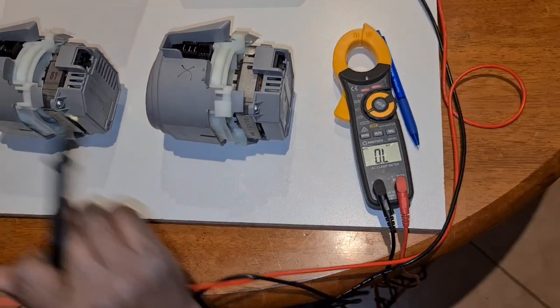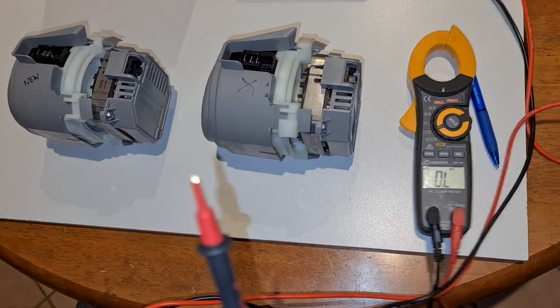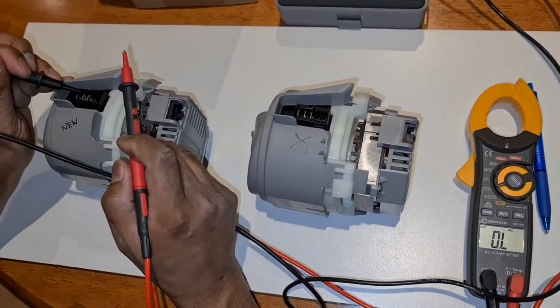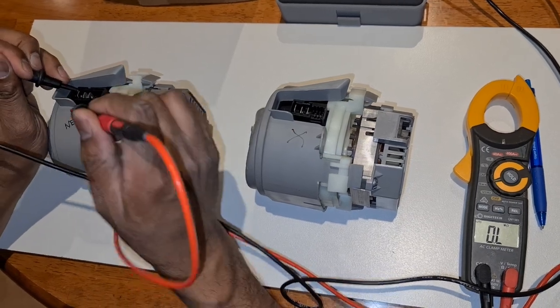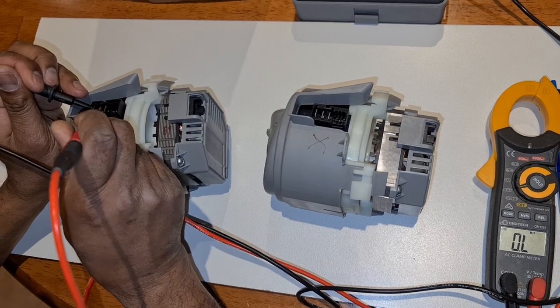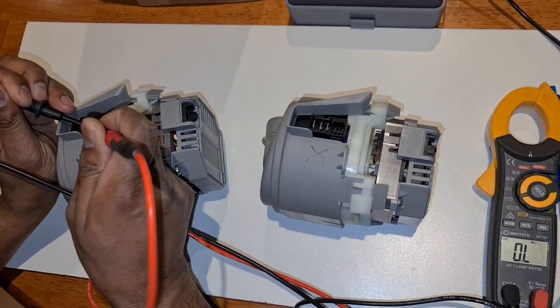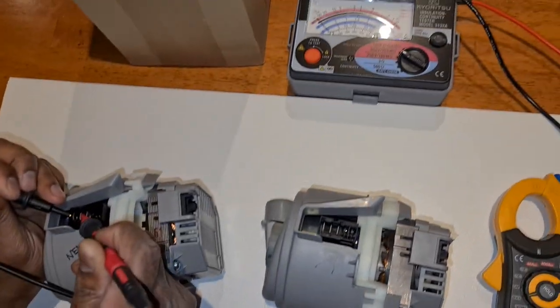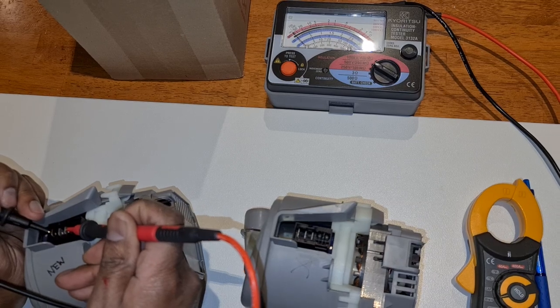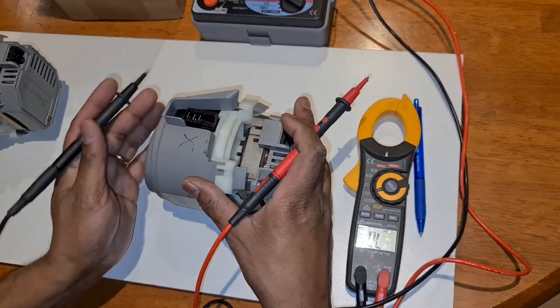So typically, when we do this type of test, we will do our first terminal over here, the earth terminal. That's the earth. Sorry, I need to get a good connection up there. And you have hardly any deflection on the instrument. So you do the second terminal as well, and same. So that's a good result. That's what we'd expect.